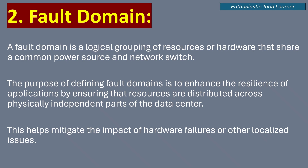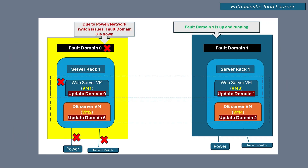This helps mitigate the impact of hardware failures or other localized issues. Consider a database or web server with multiple replicas. These replicas are distributed across different fault domains. If there is a network switch failure in one fault domain, the database or web server can still operate using replicas in other fault domains, ensuring uninterrupted service.